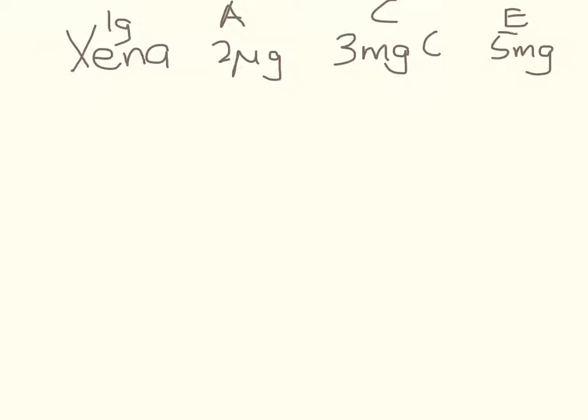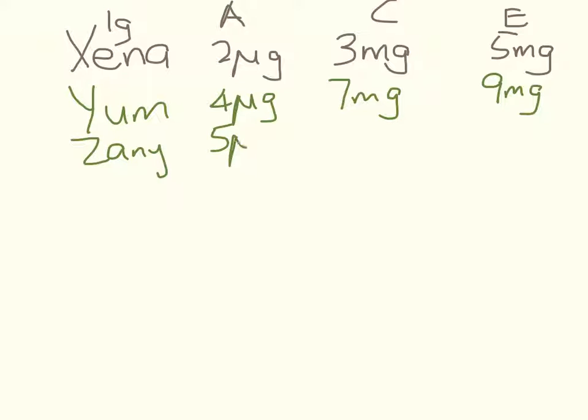Right, so let's do a little table. Here's what they've each got. Xena, one gram of Xena has got two micrograms of A. It's got three milligrams of C, and it's got five milligrams of vitamin E. The next one, Yum, has got four milligrams of A, seven milligrams of C, and nine milligrams of E. Zany has got five micrograms of A, 10 milligrams of C, and 14 milligrams of E.